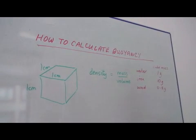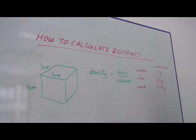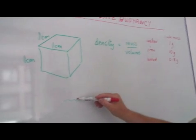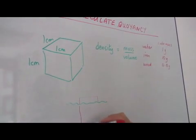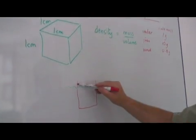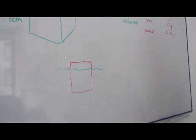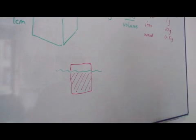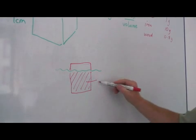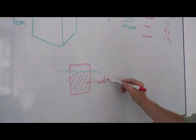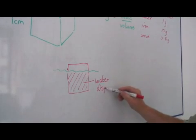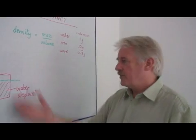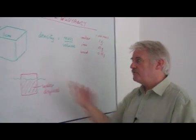So if I put this object, whatever it is, into water — here's my water and I put the object into water. Here's the object. Some of it will sink below the water. If it's floating, this amount of the object is pushing water aside, and therefore this is the water displaced. Now if the water displaced has a greater weight than the object itself, the object will float.